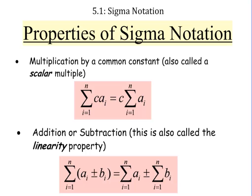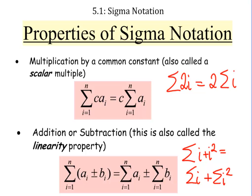One of them is that you can pull out a constant. So if somebody asks you to add up 2i, that's the same as adding up 2 times i. And then the other one is that you can break things apart over addition and subtraction. So if somebody asks you to add up i plus i squared, you can just add up i and then add up i squared. Same thing if it was i minus i squared.